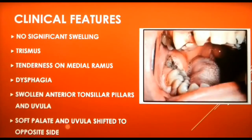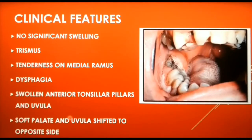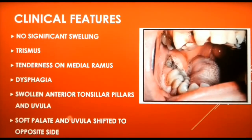The infection of the pterygomandibular space is associated with pericoronitis of the third molar. Even established cases of pterygomandibular space infections do not cause much swelling of the face. The clinical hallmark of every masticator space infection is trismus. If trismus is not present, it can be considered that these spaces are uninvolved in the infectious process.